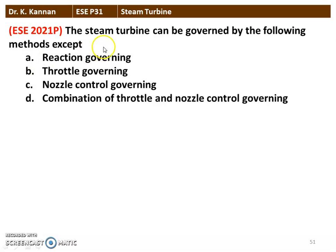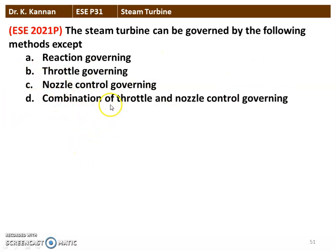Next question — the steam turbine can be governed by the following methods except: reaction governing, throttle governing, nozzle control governing, combination of throttle and nozzle control governing. The statement which is not a governing method is reaction governing — there is no reaction governing in steam turbine governing methods.